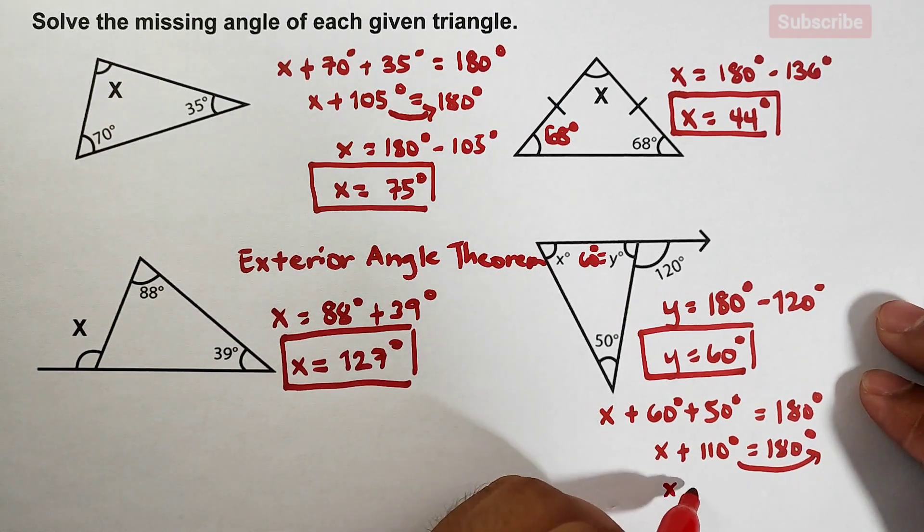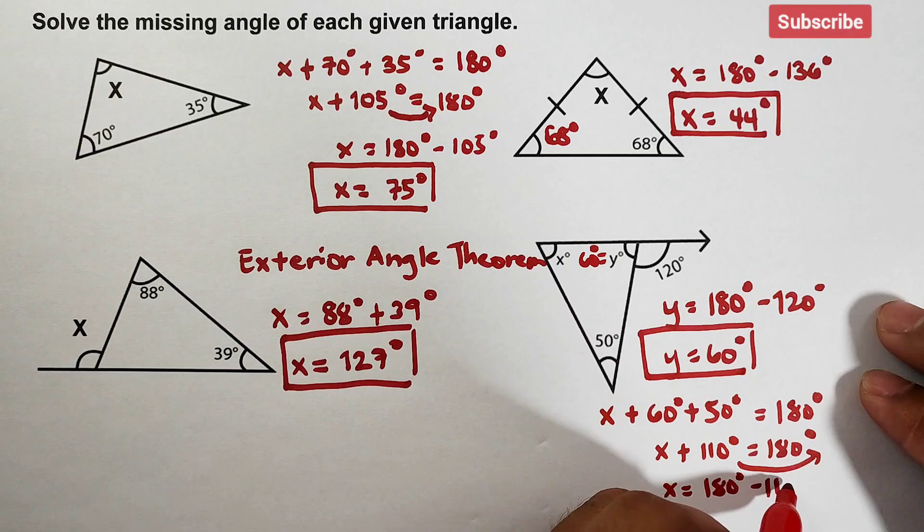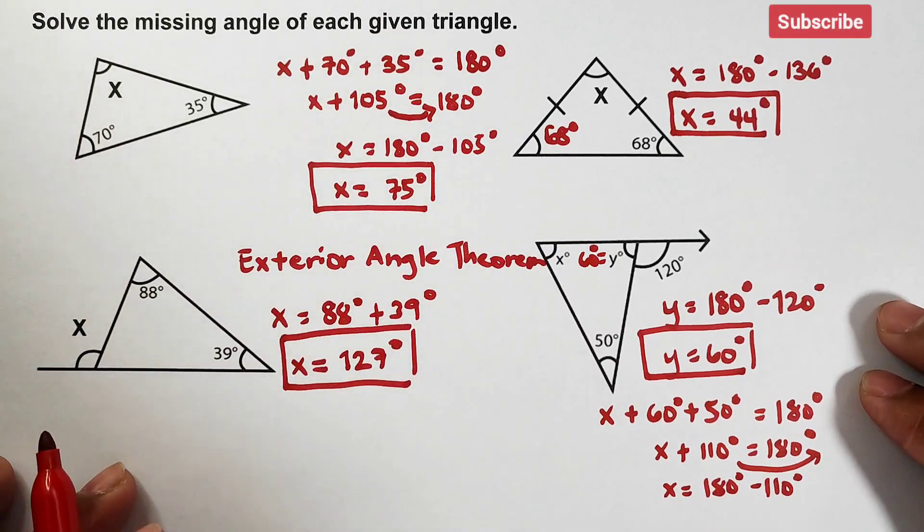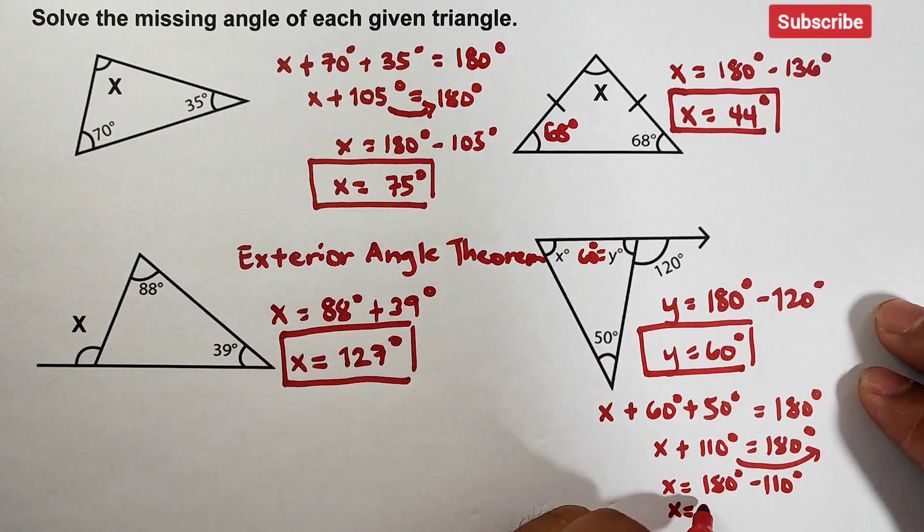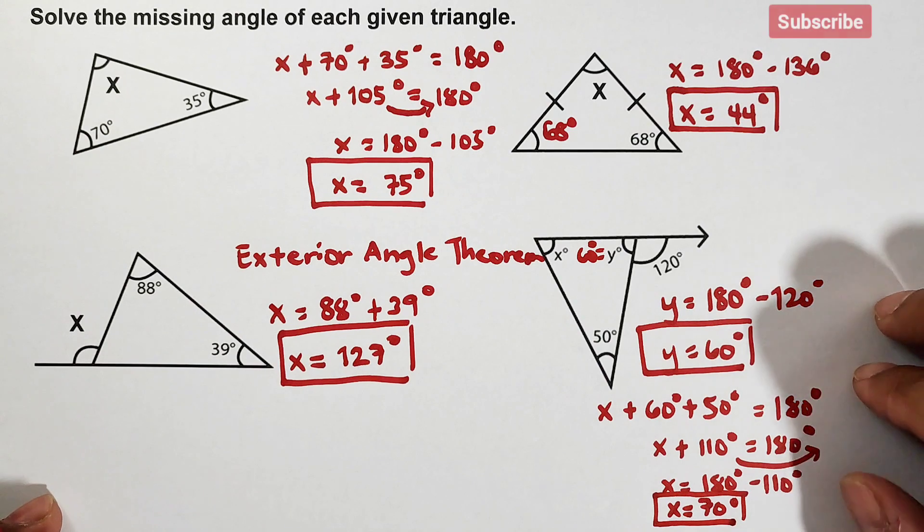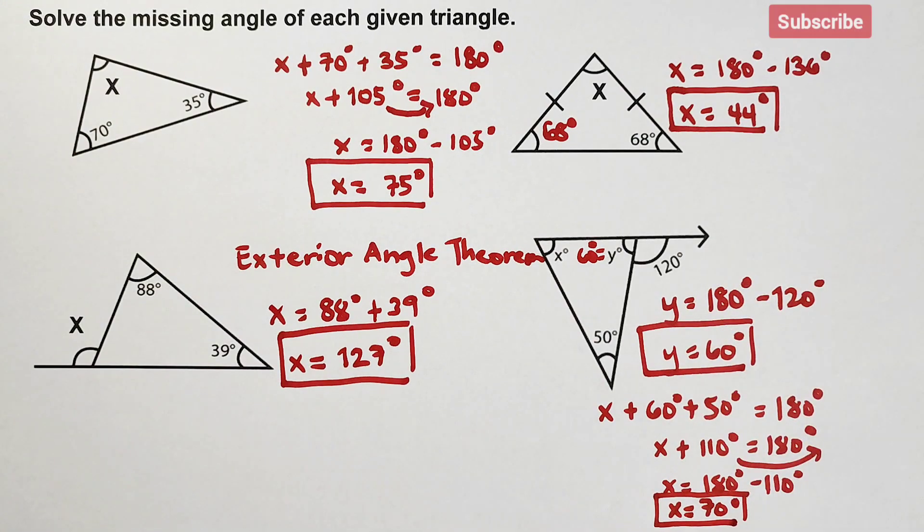Okay, that is x is equal to 180 degrees minus 110 degrees, and as you can see, subtracting them, it will give us the answer of 70 degrees. This is the answer for the variable x in the last triangle.